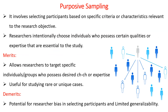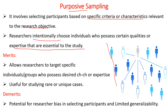The second type is purposive sampling. It involves selecting participants based on specific criteria or characteristics relevant to the research objective. Researchers intentionally choose individuals who possess certain qualities or expertise essential to the study. For example, if we want to know about the experience of COVID, we have to purposely select individuals who recovered from COVID, as only they can describe that experience.